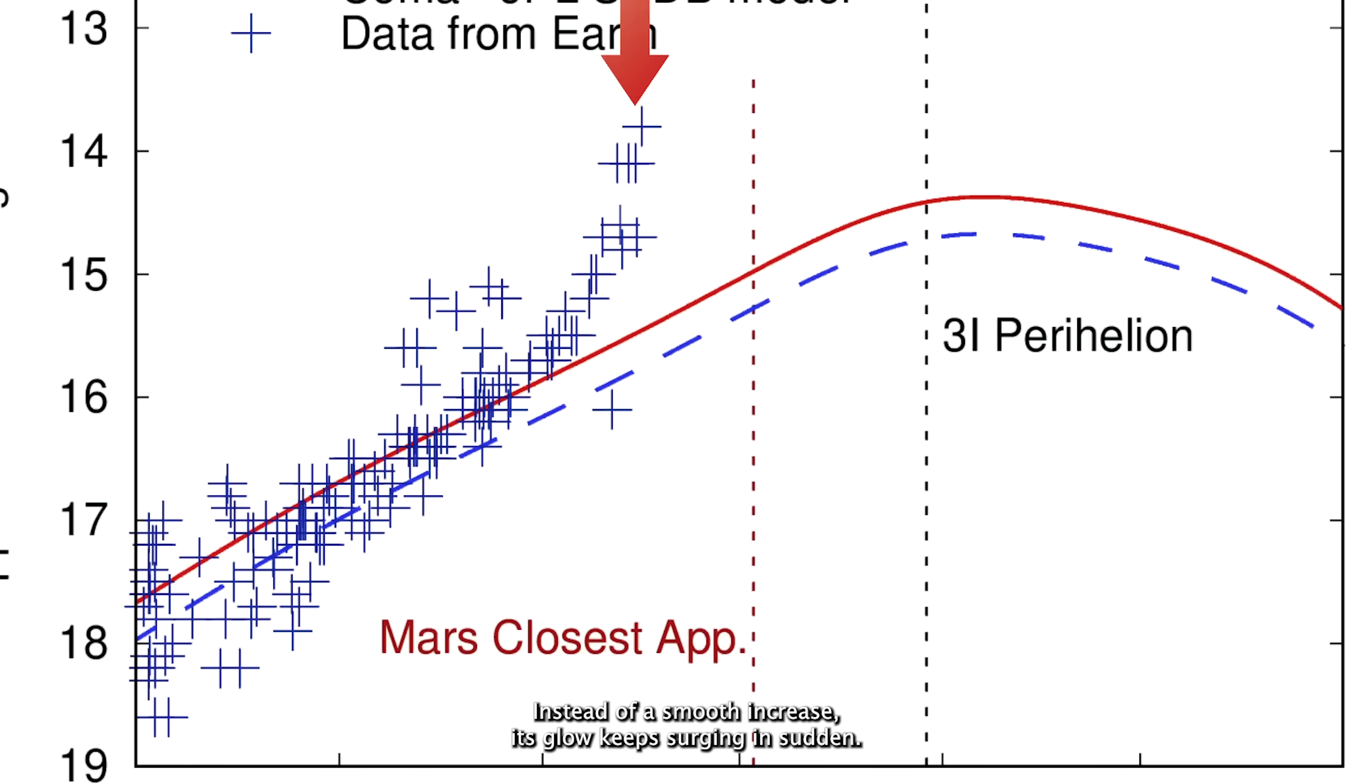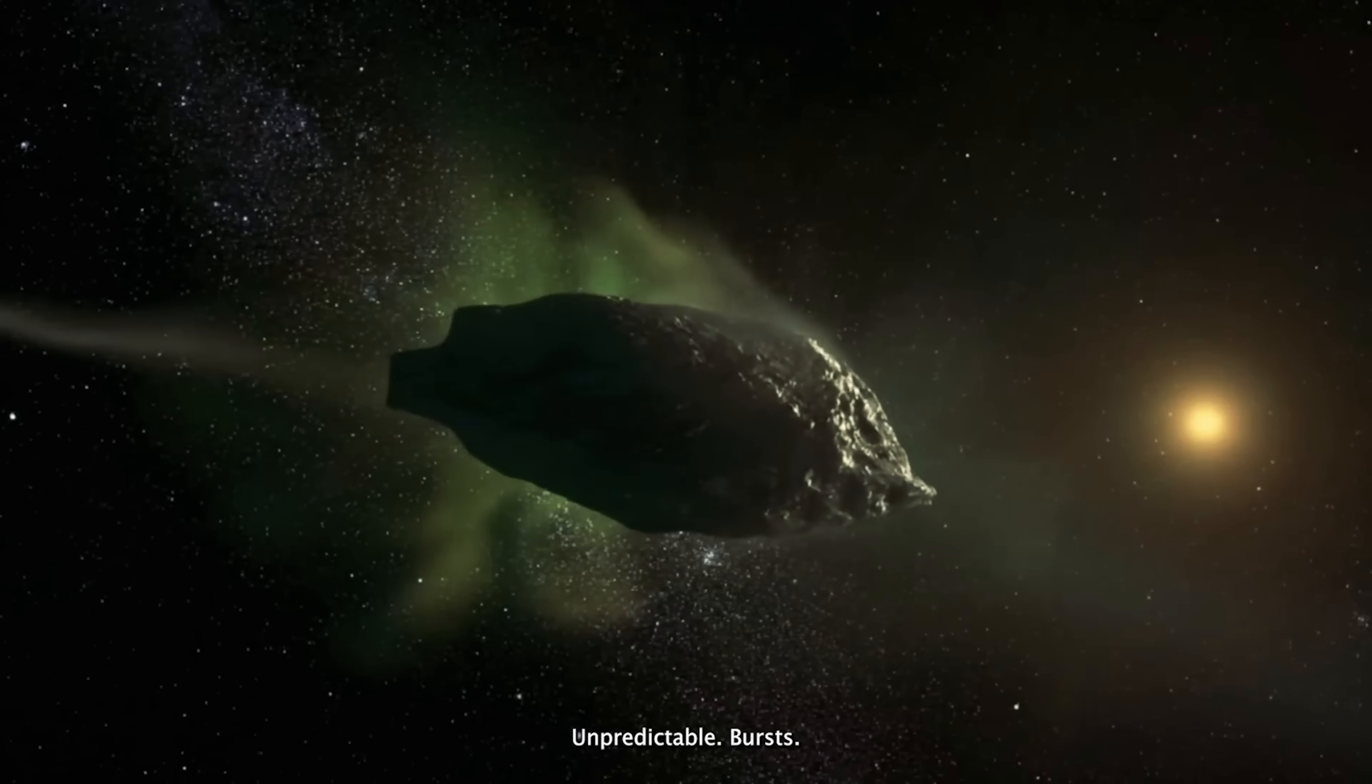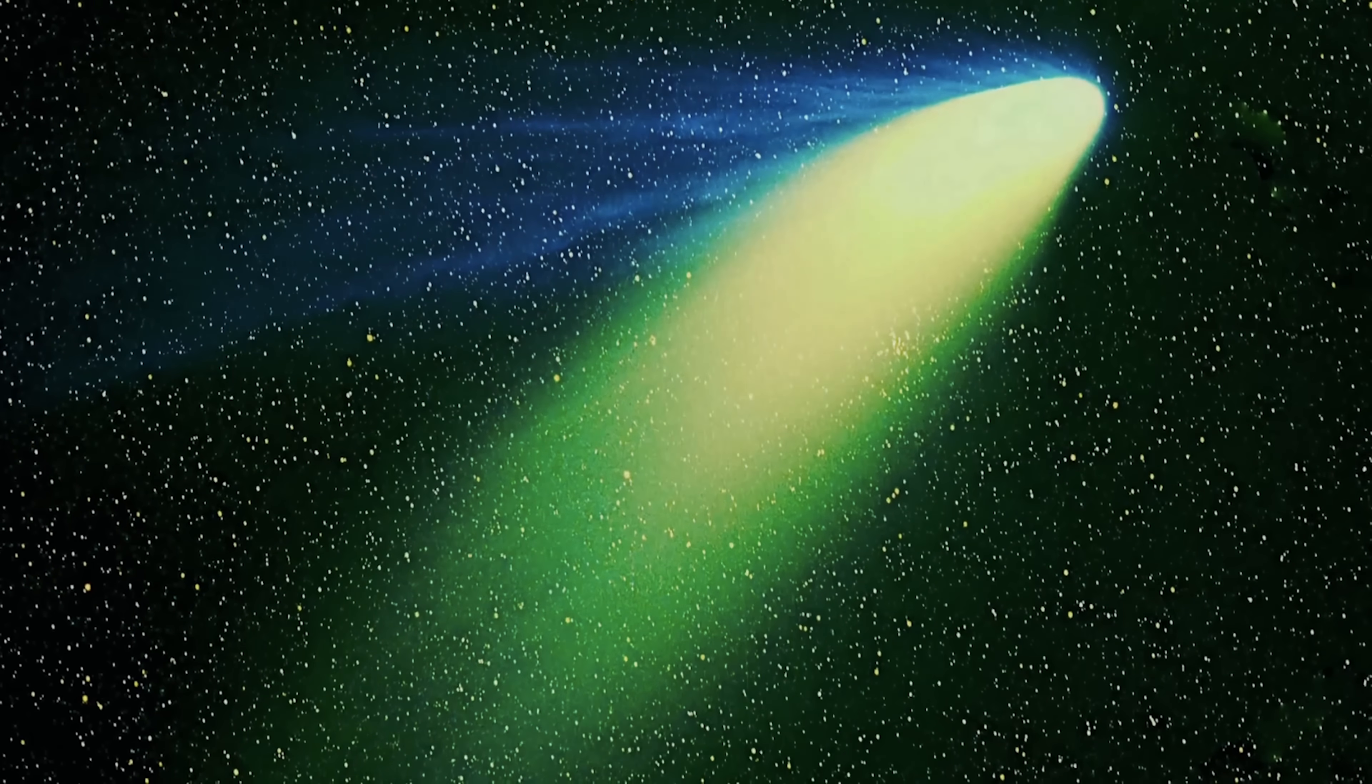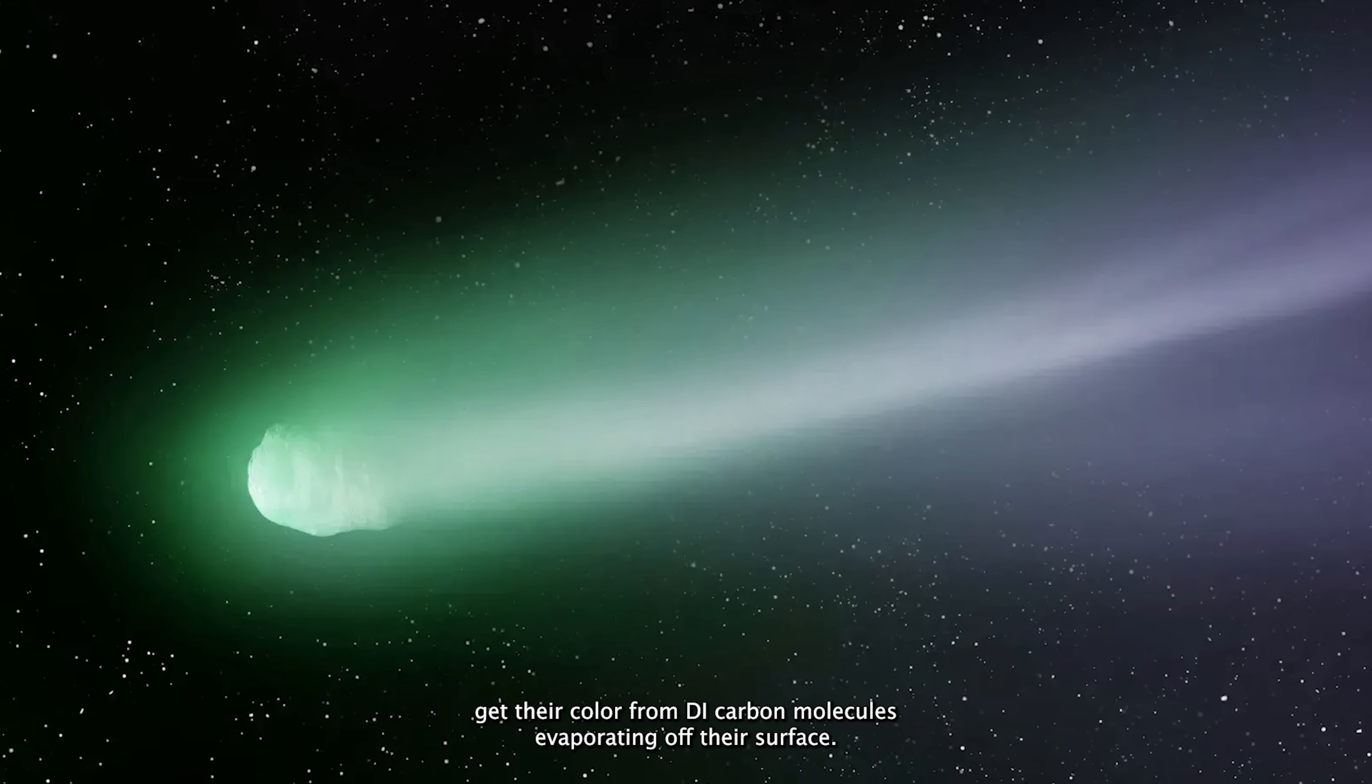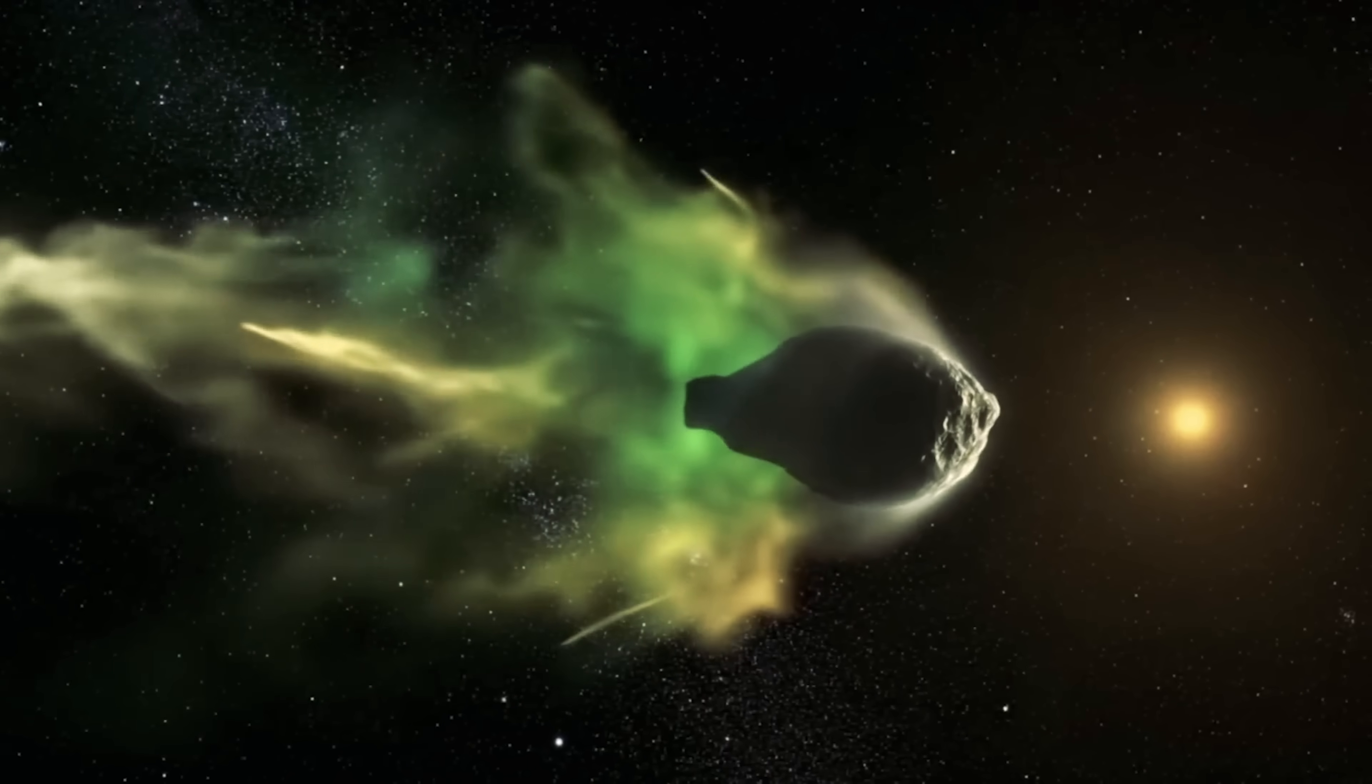Instead of a smooth increase, its glow keeps surging in sudden, unpredictable bursts. And that eerie green aura? Still a mystery. Most green comets get their color from dicarbon molecules evaporating off their surface. But puzzlingly, observations of 3i Atlas show almost no dicarbon at all.